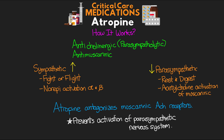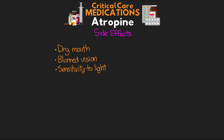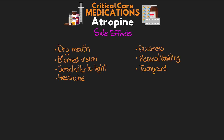Now let's talk about some of the side effects of atropine. Some potential side effects that your patient may experience can be things like dry mouth, blurred vision, sensitivity to light, headache, dizziness, nausea, vomiting, and tachycardia.